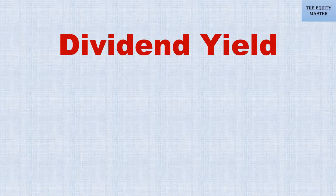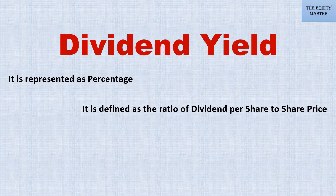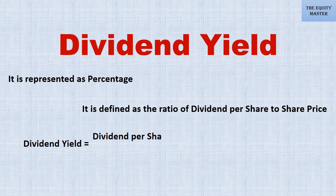Now we will discuss what is dividend yield. It is represented as a percentage and is defined as the ratio of dividend per share to share price. So dividend yield equals dividend per share divided by share price, multiplied by 100.